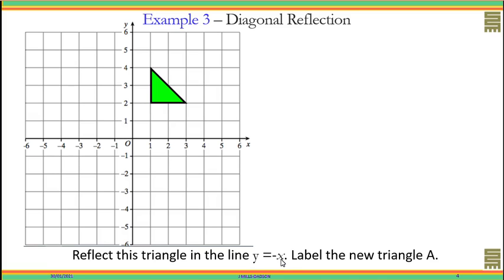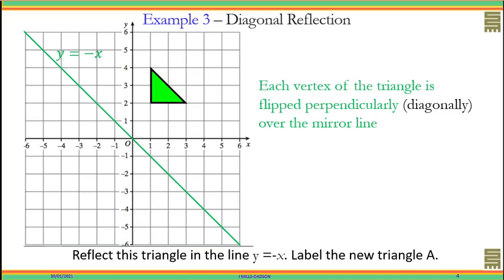Y equals negative x is a diagonal line, and it's this line. In this case we're going to move perpendicularly, so it has to be a diagonal movement to make a perpendicular line because we need to make 90 degrees. If the middle line is a diagonal line, then the flipping must also be moving in a diagonal manner to make 90 degrees.